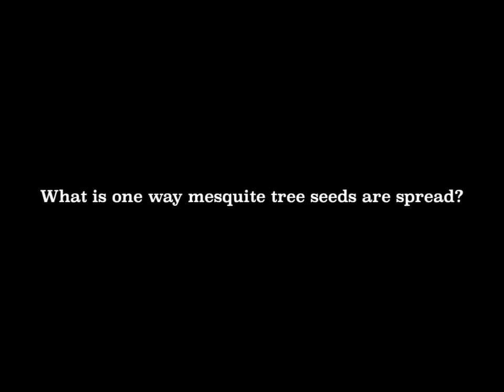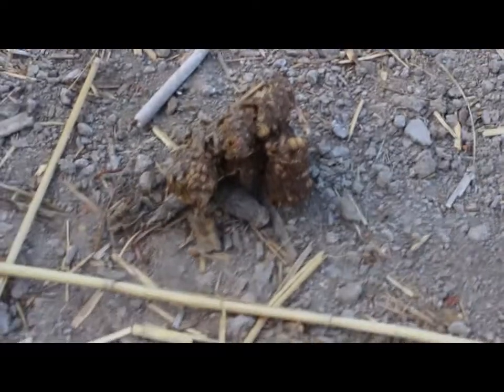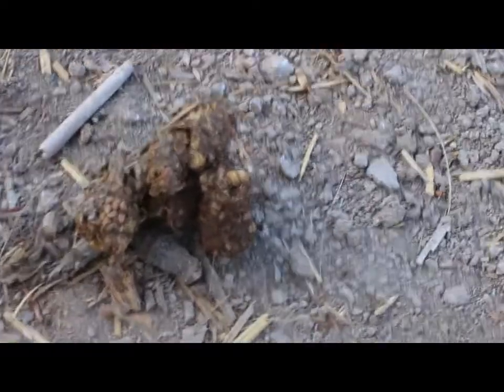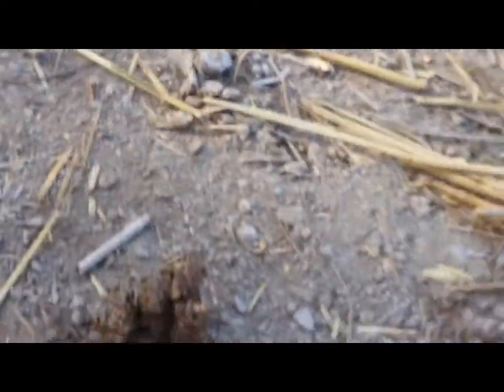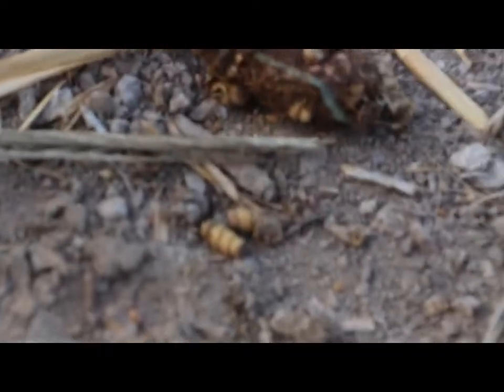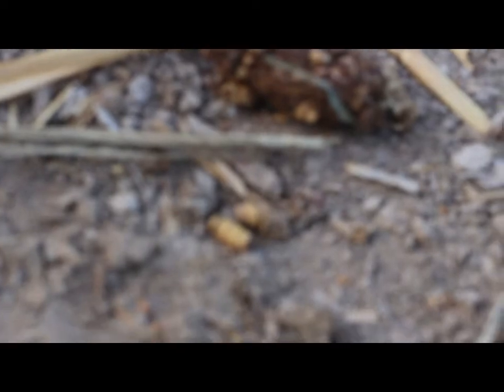In the section from before, we went over seed dispersal. What is one way mesquite tree seeds are spread? Well, if you are in an area where mesquite trees are found, you might find scat that contains the seeds of mesquite trees. Scat is a scientific word for poop. Here you can see scat, aka poop, that contains screw bean mesquite pods. This was most likely from a coyote, which are common here in Nevada.